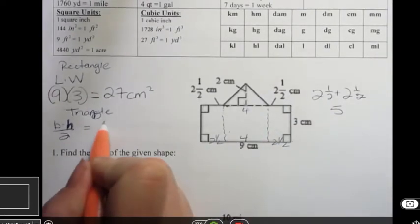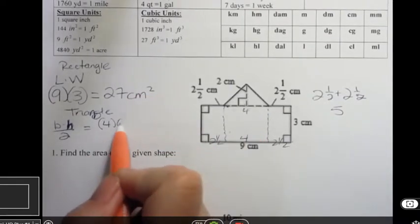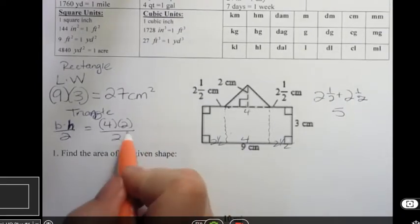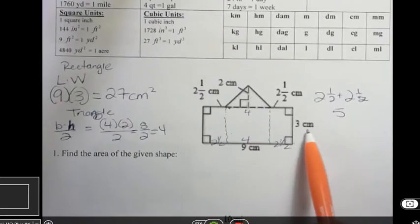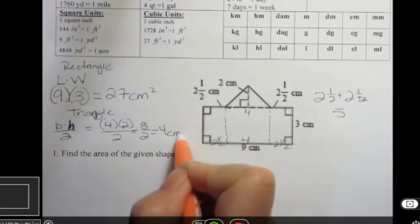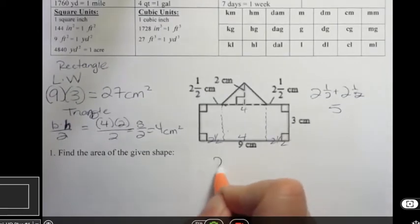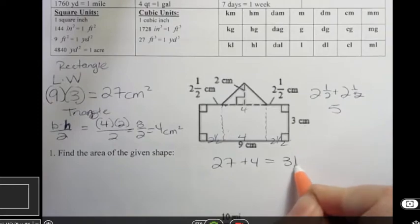So I have 4 times the height of 2 divided by 2, and that's just 8 over 2, or 4, and that is centimeters squared. So the entire area of this shape is going to be 27 plus 4, or 31 centimeters squared.